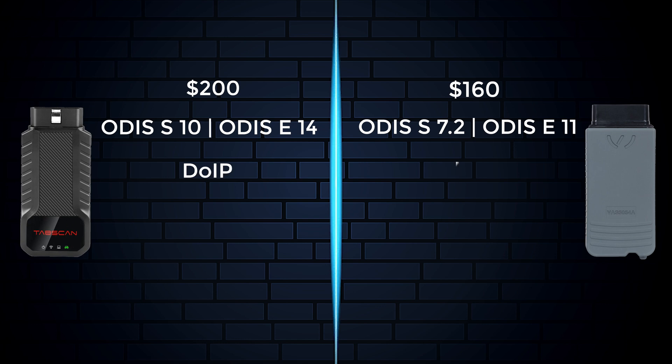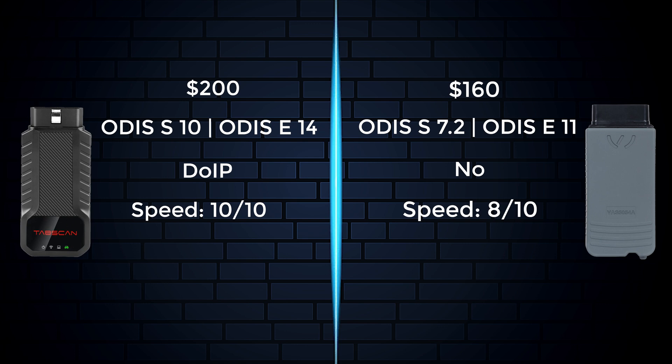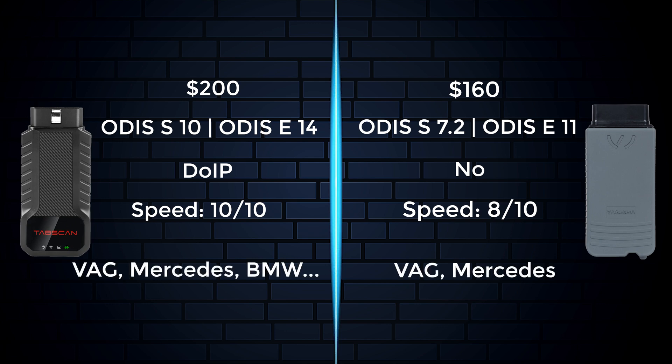Regarding the connection protocol, TabSkin is equipped with the Duo IP protocol, which you may need to perform advanced functions. Its working speed is also significantly faster than the VAS5054A. If you own the VAS5054A, you can perform diagnostics and repairs on VAG and Mercedes cars.